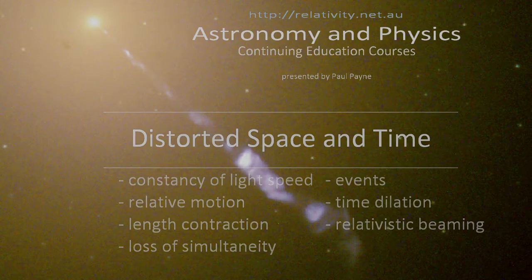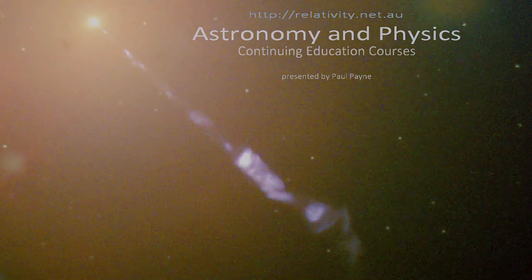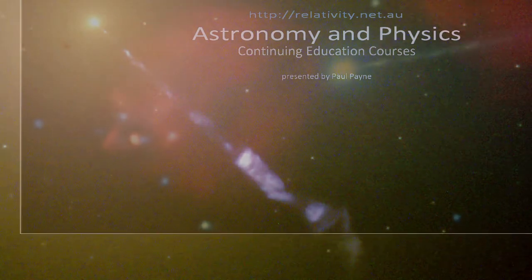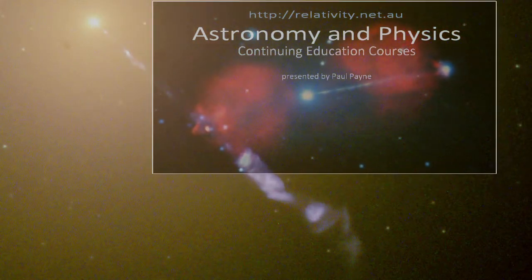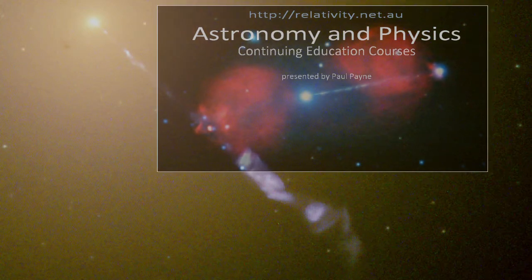In this video, I'm going to focus on how the constancy of the speed of light and relative motion requires distorted space and time. I will also focus on relativistic beaming and how it can explain some of the characteristics of these wonderful jets emanating from around supermassive black holes in the centers of galaxies.